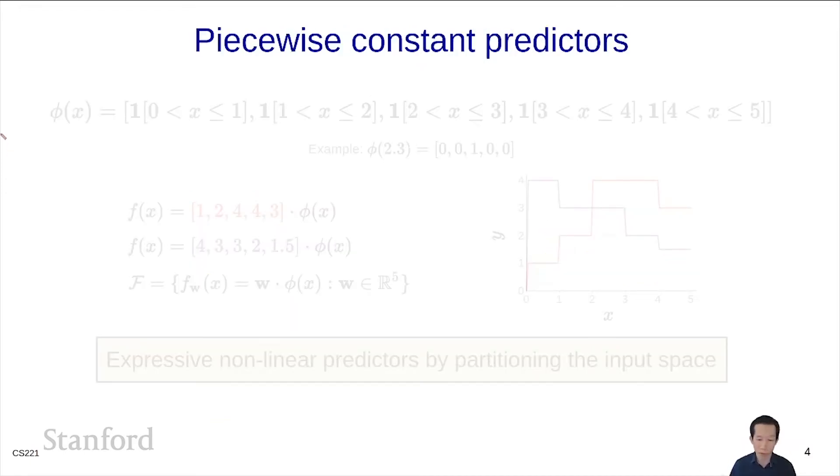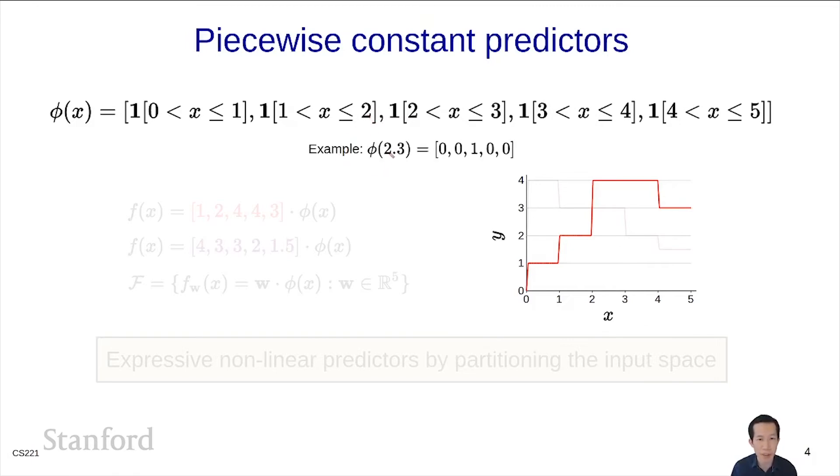Quadratic predictors are great, but they can only vary smoothly. What happens if you want a function that looks like this? Here's an example of a piecewise constant predictor. We can get this predictor by reimagining what a feature vector is. I'm going to define φ(x) by carving up the input space into a bunch of regions and defining a feature to be whether x lies in that region or not. The first feature tests whether x is between 0 and 1, and the indicator function will return 1 if that's true and 0 otherwise. The second one tests between 1 and 2, and so on. For example, if you punch in 2.3, that is 0 on all the features except for this one.